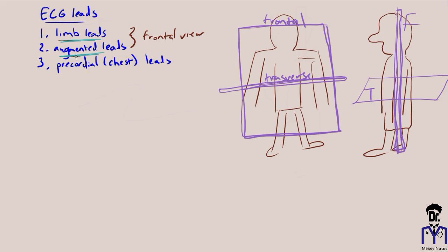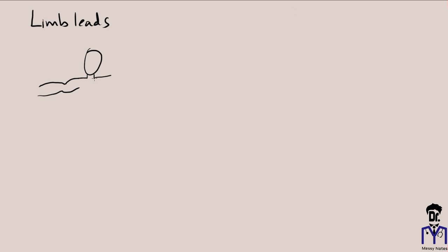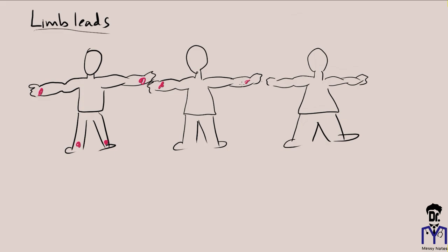We'll talk about the limb leads first, then get to the augmented leads, and finish the first part talking about the precordial leads. In order to produce the limb leads, we place electrodes on the right and left wrists and on the ankles. I drew three different models because we will produce three different leads. The limb leads are designated by Roman numerals — Lead I, Lead II, and Lead III.